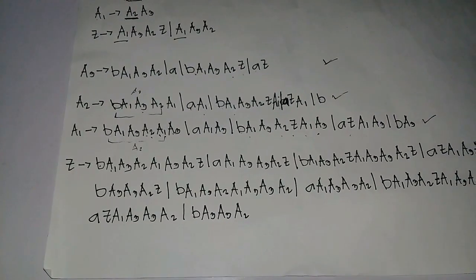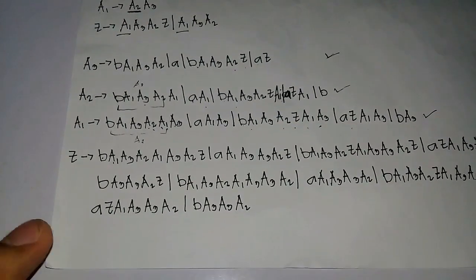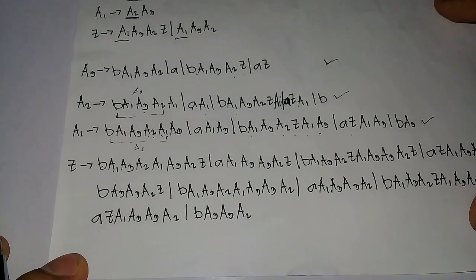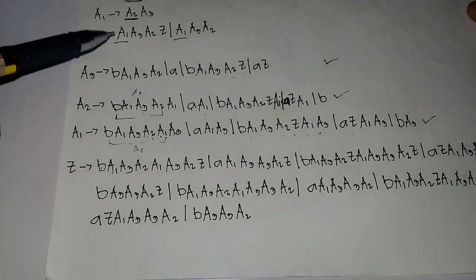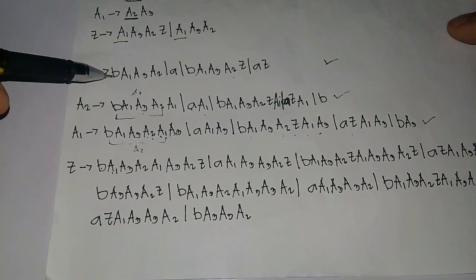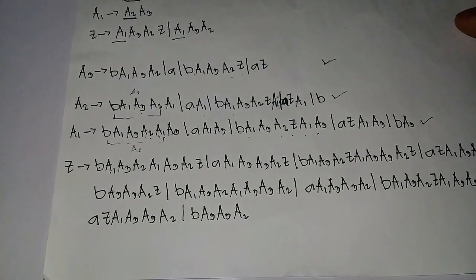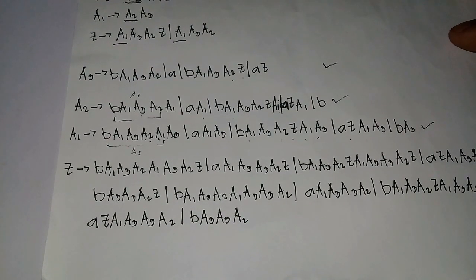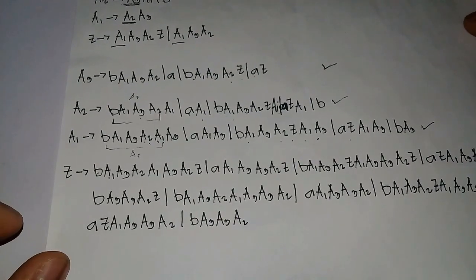This is our final form in GNF. The final grammar is now complete. As you can see, all productions are in GNF form because in every production the terminal appears first. We are done. In solving GNF, you must remember to follow the steps and solve it properly.